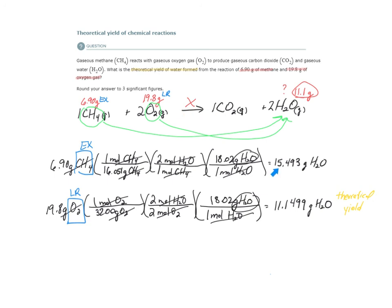We will never get 15 grams of water. Why? We won't get 15 grams of water because even though we have enough methane to make 15 grams of water, we don't have enough oxygen. The oxygen will run out once we have 11.1 grams of water. And then, because there's no more oxygen, the reaction stops.